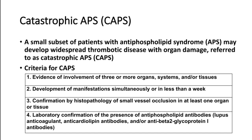Additional criteria for CAPS include confirmation by histopathological results, such as small vessel vasculitis in multiple organs. Laboratory confirmation of antiphospholipid antibodies is very important — lupus anticoagulant, anti-cardiolipin antibodies, and anti-beta-2 glycoprotein 1 antibodies should all be positive.